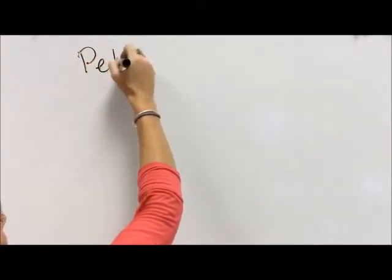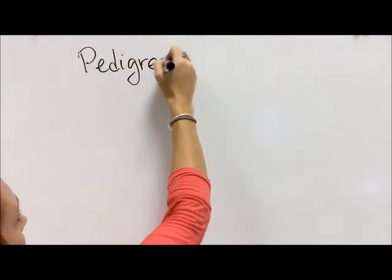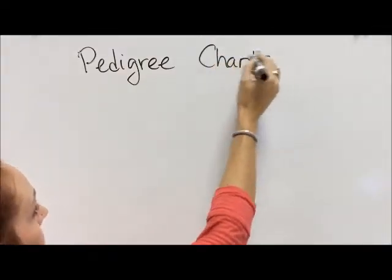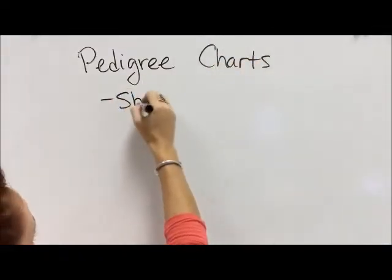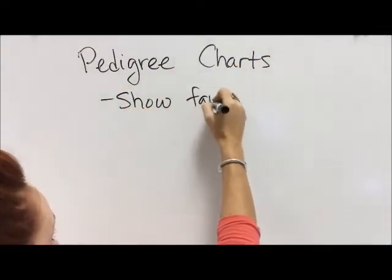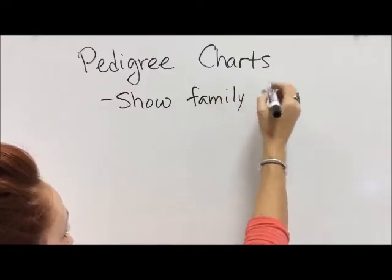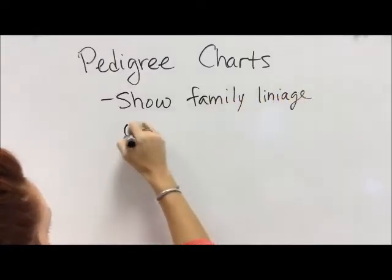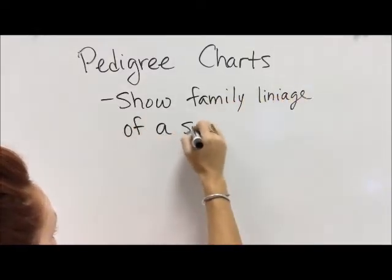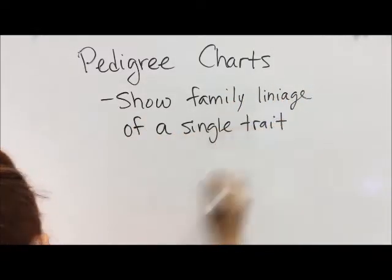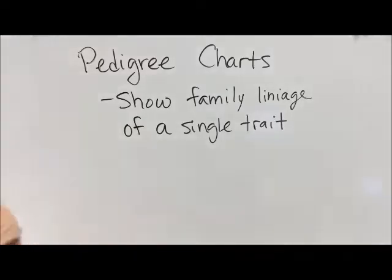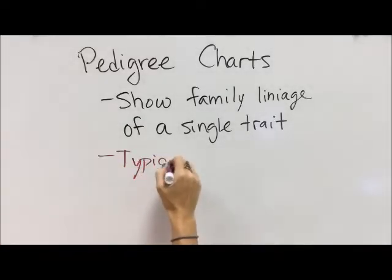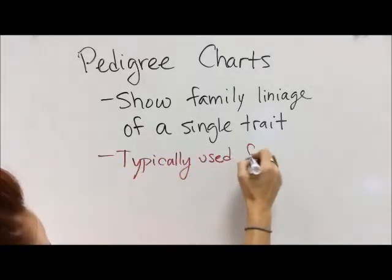Today we're going to take a look at a little diagram called the pedigree chart. The idea of pedigree does come from people who breed dogs because they're concerned about family lineage. In the case of a pedigree chart, we're looking at the family lineage of a single trait.